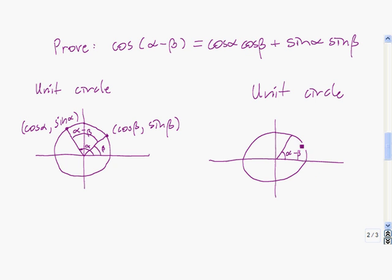In the second diagram, I'm going to draw the angle alpha minus beta. Then the x-coordinate of the point is the cosine of that angle, and the y-coordinate is the sine of that angle. The last point I'm going to plot is this point right here, which, since we're on the unit circle, the x-coordinate is 1, and since we're on the x-axis, the y-coordinate is 0.